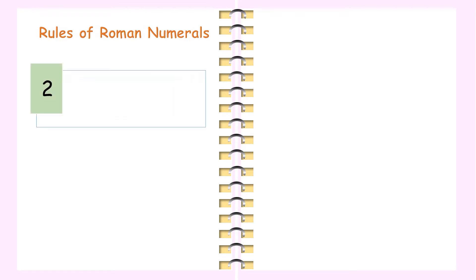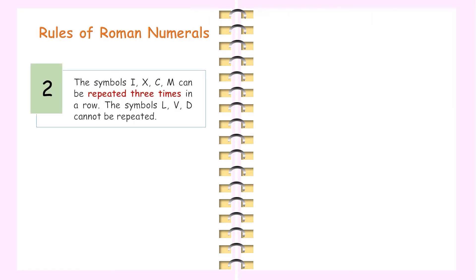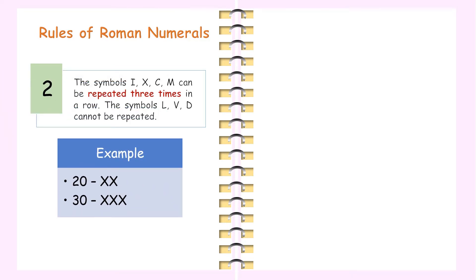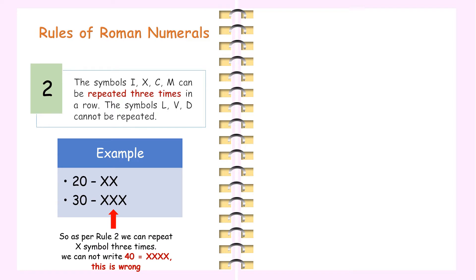Rule 2: The symbols I, X, C, and M can be repeated up to 3 times in a row. The symbols L, V, and D cannot be repeated. For example, 20 can be written as XX, and 30 can be written as XXX. As per Rule 2, we can repeat the X symbol up to 3 times. We cannot write 40 as XXXX — that is wrong.